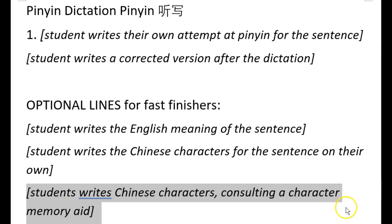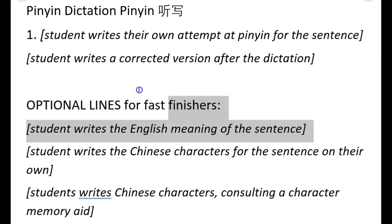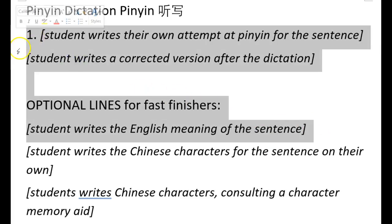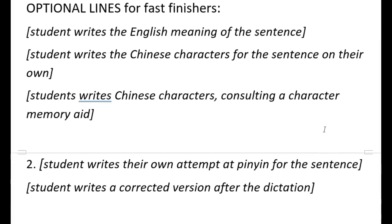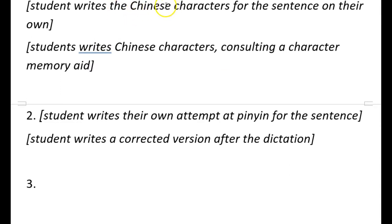That character line was rarely needed. So on their page, number one would have up to five lines, though usually just the top three: the attempted pīnyīn, a skipped line, and the English. Once we got all of those, we moved on to number two. Some students would get to the character line, which was helpful for me — I could see which characters they were already retaining. This activity was more commonly done in my level-one classes, so it was really helpful to see which characters were starting to stick well enough that students could hand-write them from memory.